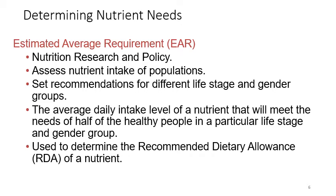Estimated average requirement, EAR: these deal with nutrition research and policy, and are used to assess nutrient intakes of populations. They set recommendations for different life stage and gender groups — such as infant, toddler, child, teenager, adult, and elderly — since each group requires a different amount of nutrient intake. The EAR is the average daily intake level of a nutrient that will meet the needs of half of the healthy people in a particular life stage and gender group, and is used to determine the recommended dietary allowance, the RDA.